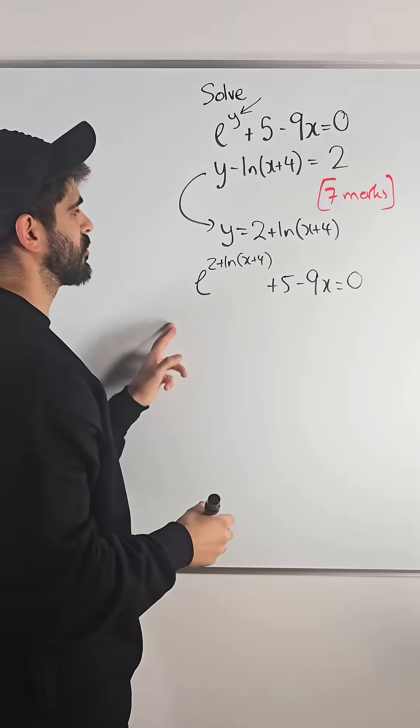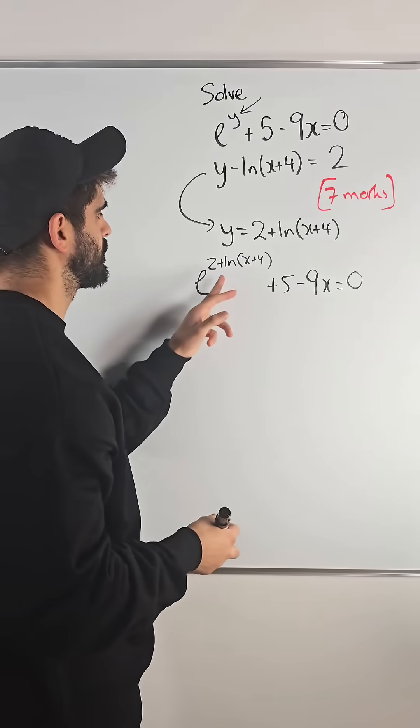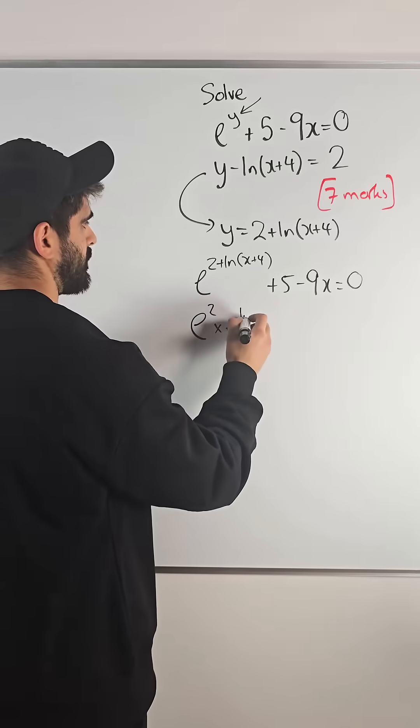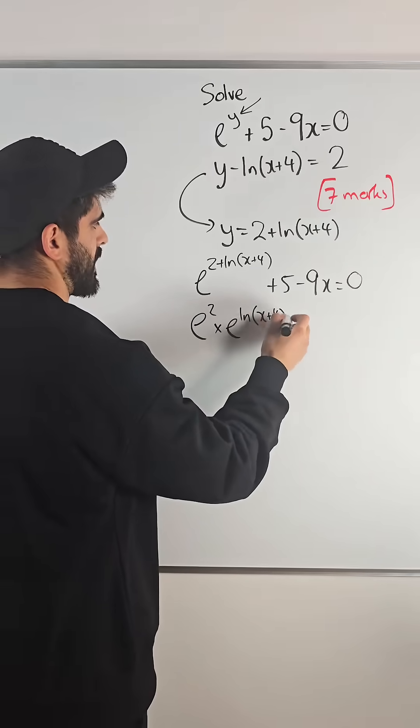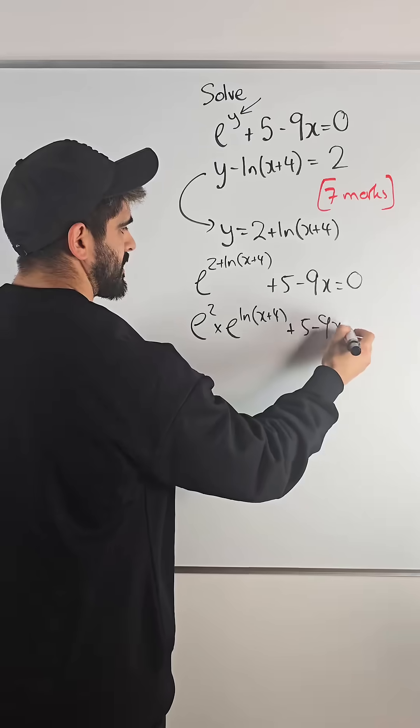Now here, e and ln don't cancel because of this plus 2, so we're going to split this up by using our power rule. This will become e squared times e to the power of ln x plus 4. A plus in the power means multiplication. Plus 5 minus 9x is 0.